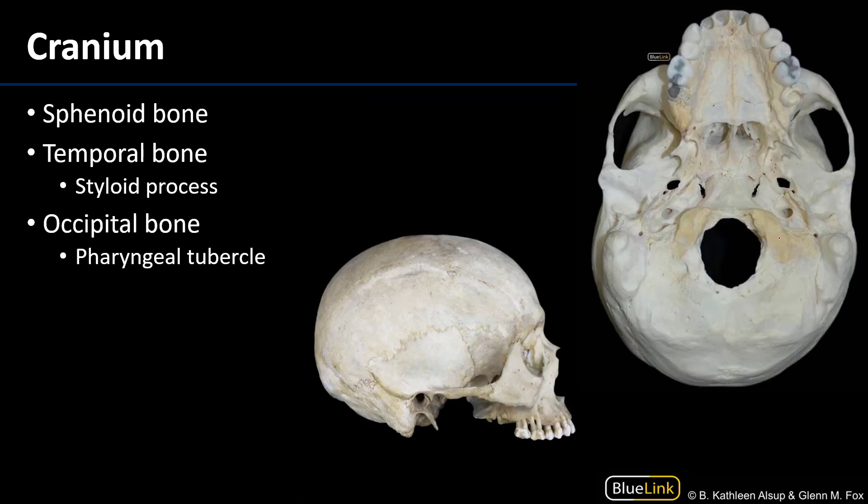Next we have the skull, which has two elements. The larger of which, the akinetic or immobile part, is called the cranium. The cranium surrounds the brain and provides the lion's share of the underlying architecture for the head and the face.